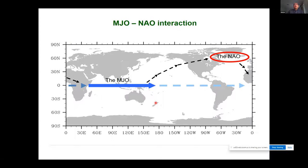The schematic of this interaction is: the MJO reaches the western Pacific, sends a northwest wave train that influences the NAO; after the NAO is amplified or changed, it can influence the MJO again. Also, even without that MJO branch, NAO variability generated by atmospheric internal dynamics can influence the initialization of the MJO.